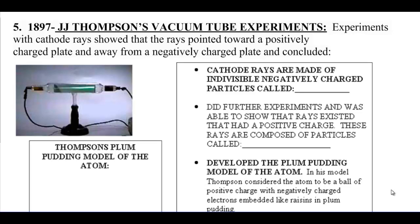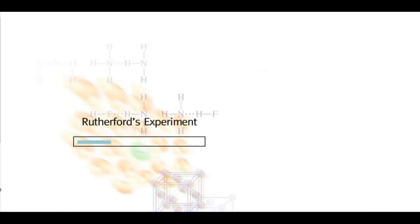Hi everybody, welcome back. This is Unit 2, Lesson 3, and we are on number 6 in our notes where we're talking about Ernest Rutherford's gold foil experiment. So I want to show you a little animation of his experimentation and then we'll get some things down in our notes. So here we go.